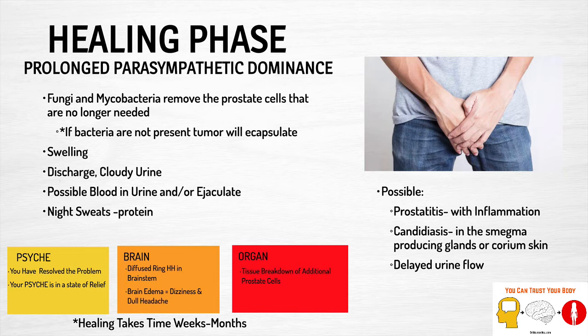On the psyche level, the person has resolved the conflict — they're in a new relationship, they've resolved their gender or procreation conflict, and the psyche is in a state of relief. On the brain level, there is a diffused ring formation around the hammer focus in the brainstem, and that slight edema can cause some dizziness and dull headaches. On the organ level, there is tissue breakdown of those additional prostate cells. Healing takes time — it could take weeks or months, depending on how long and how intense the conflict was active.